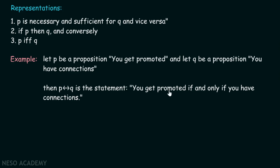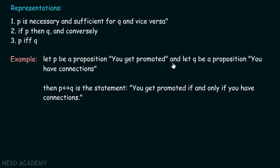This compound proposition is true whenever P is true and Q is true, or whenever P is false and Q is false. So if you get promoted and you have connections, the proposition is true. If you haven't been promoted and you have no connections, it is also true. But if you get promoted and have no connections, or if you haven't been promoted but have connections, then the compound proposition is false.